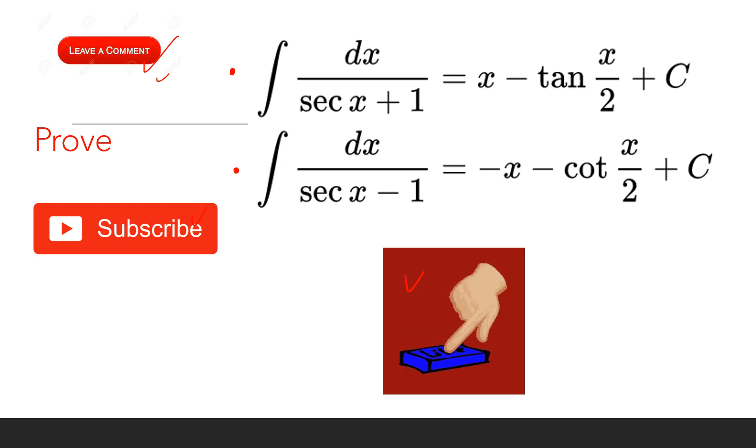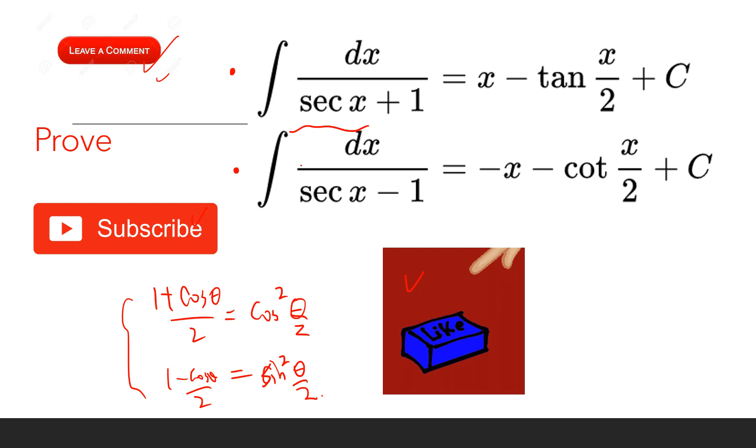So the key step is we use the double angle formula. We can rewrite secant x into 1 divided by cosine x, use the formula, and then we can get this result.